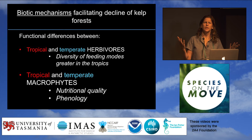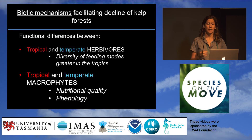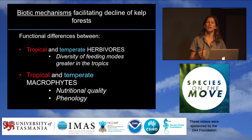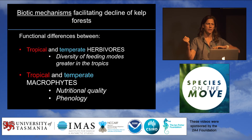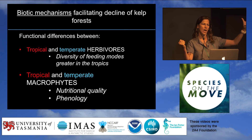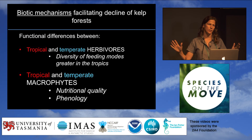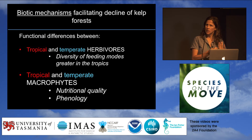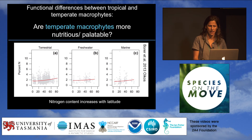Besides temperature, I want to discuss the biological mechanisms that could be facilitating the decline of kelp. There are two main things to consider, relating to the functional differences between tropical and temperate taxa. In terms of herbivores, tropical herbivores tend to be a lot more diverse in their feeding — some species focus on small algae, some on larger macroalgae — and together they can really strip the bottom of all seaweeds. I'd also like to focus on functional differences between tropical and temperate macrophytes: how they differ in nutritional quality and phenology, and how that can result in the decline of kelp forests.